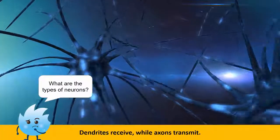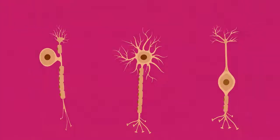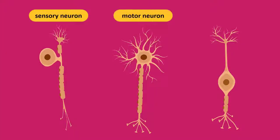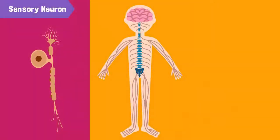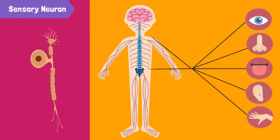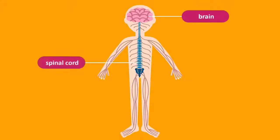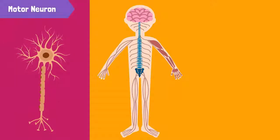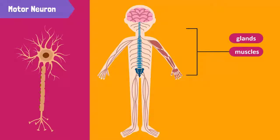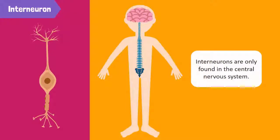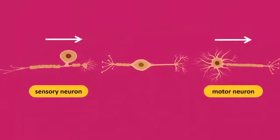There are three types of neurons: sensory neurons, motor neurons, and interneurons. Sensory neurons carry messages from sense organs to the central nervous system. The central nervous system consists of your brain and spinal cord. They process the information brought to them by the sensory neurons. The motor neurons carry messages from the central nervous system to the other parts of the body such as muscles, glands, and organs. Interneurons, on the other hand, are only found in the central nervous system and connect a sensory neuron to a motor neuron.